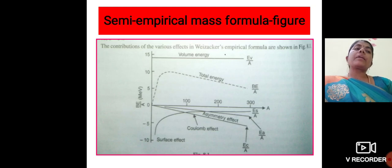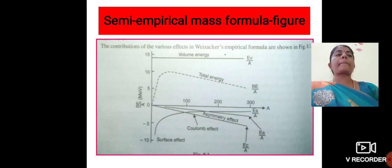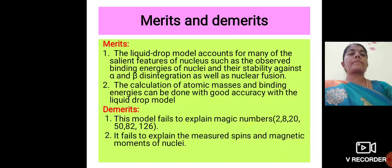This is the semi-empirical mass formula shown here. In the x-axis we have taken the atomic mass number A, and in the y-axis we have taken the binding energy B by A. If the graph is plotted, we can get the graph like this. The volume energy is alone the positive quantity, and all the other quantities are negative.